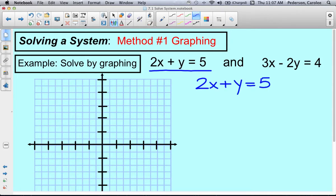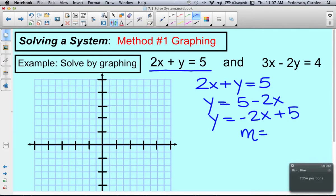I'm going to convert this to slope intercept form. So I'm going to subtract 2x from both sides. I have 5 minus 2x, and then I'm going to put it in slope intercept form with the negative 2x first, and then the 5. So my slope is negative 2 over 1, and my y-intercept is 5.